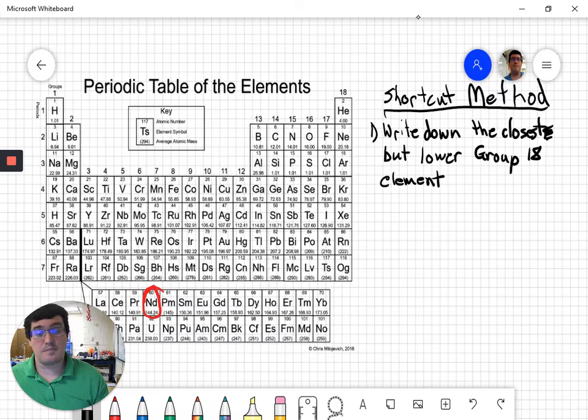We can't use 86 because it's higher. The next one we can do is element number 54. So what we're going to do to show that, by the way, I'm going to write down here which element we're looking at. It's element neodymium. It's element number 60.